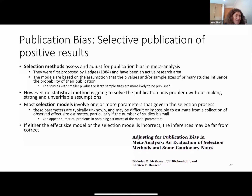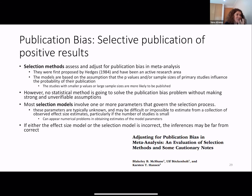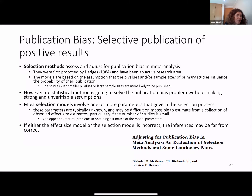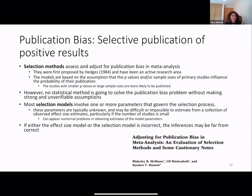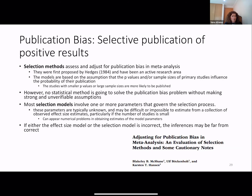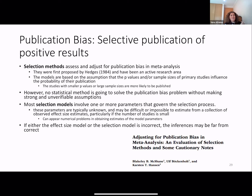However, no statistical method is going to solve the publication bias problem without making strong and very variable assumptions. Most selection models involve one or more parameters that govern the selection process. These parameters are typically unknown and may be difficult or impossible to estimate from a collection of observed effect size estimators, particularly if we have a small number of studies. Numerical problems can appear, and if either the effect size model or the selection model is incorrect, the inference may be far from correct.